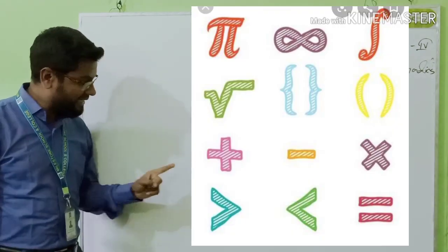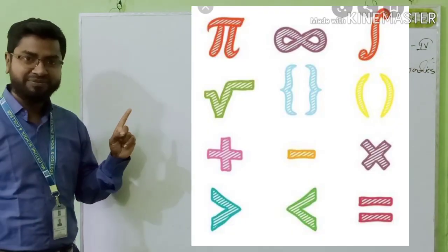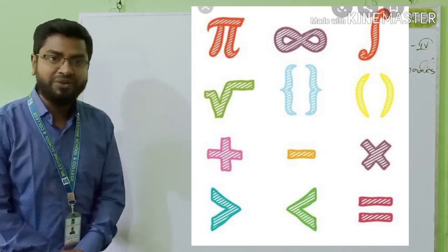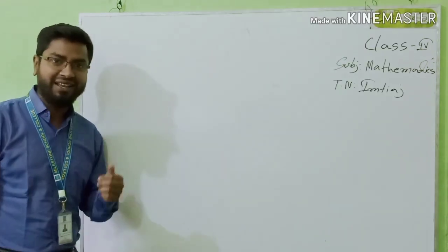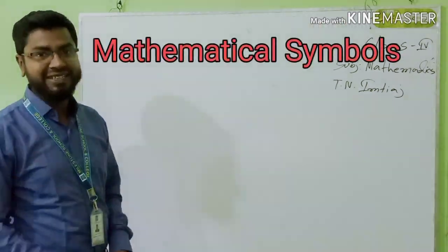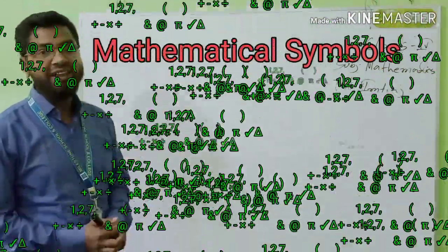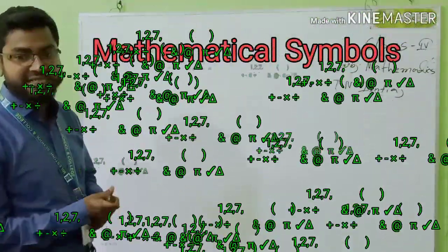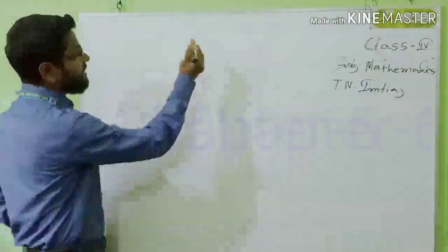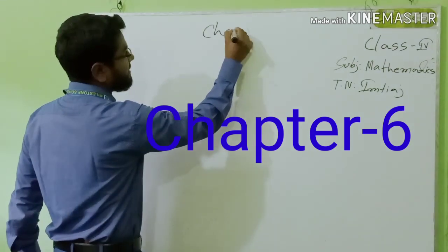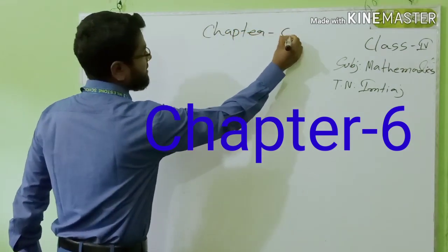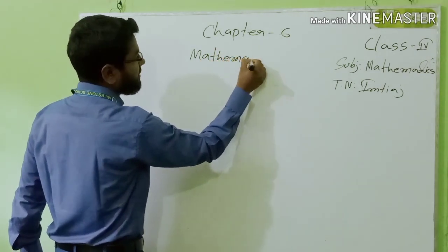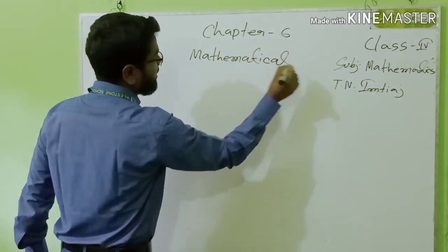See this symbol. Today, which chapter will we solve? Can you tell? Yes, you are right — Mathematical Symbols. It is in Chapter 6. Mathematics, Chapter 6: Mathematical Symbols.